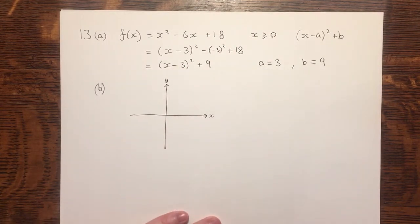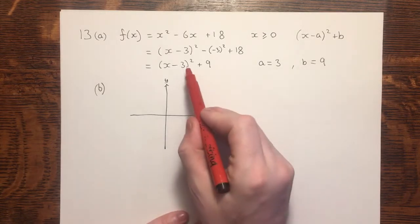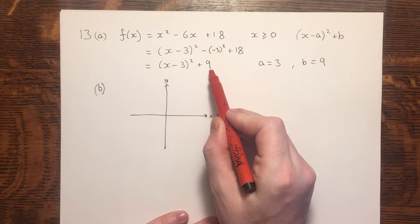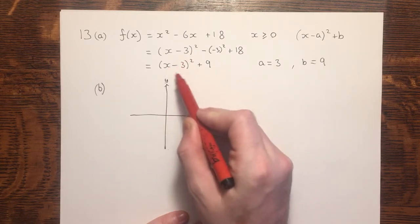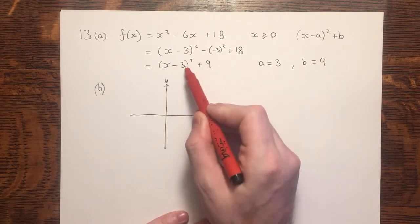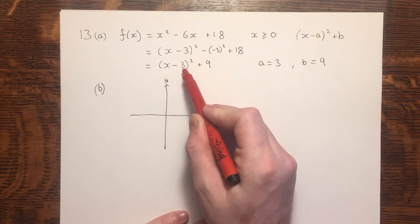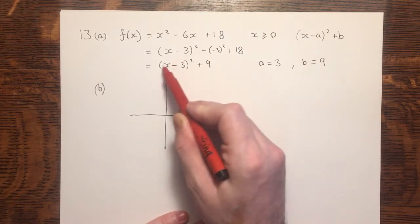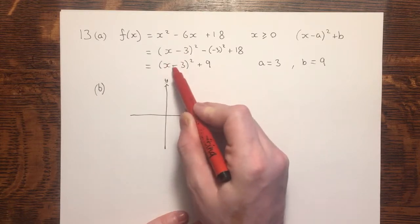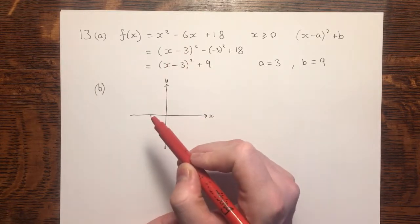Having completed the square, the coordinates should be immediately apparent for the minimum point. The minimum point's coordinates will be positive 3, positive 9. Inside the bracket there, we flip the sign. The way to remember that is, what would the x value be? 3 minus 3 gives us 0. That's how we minimise this. So we have 3 there, which is the opposite in sign of that minus 3.